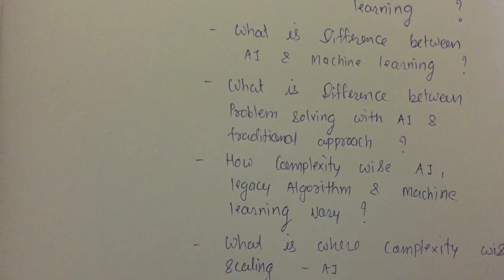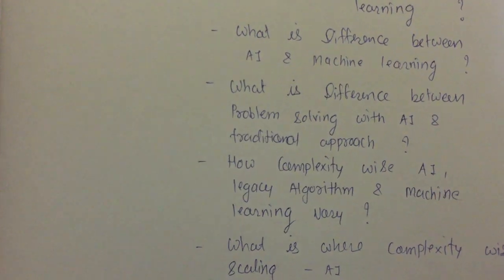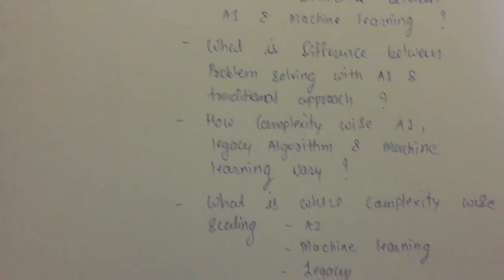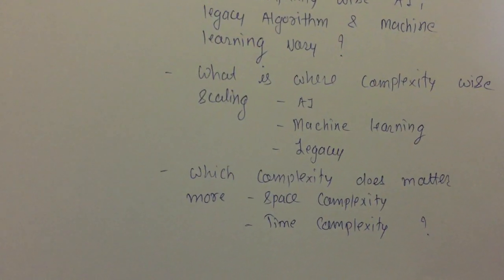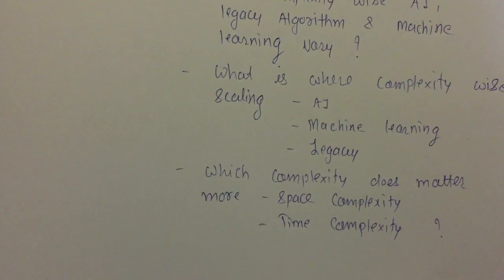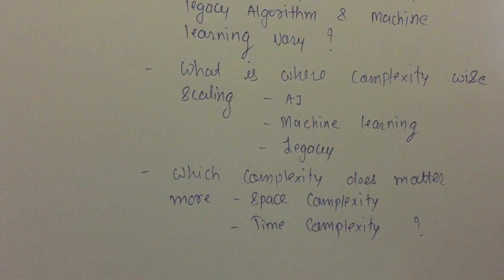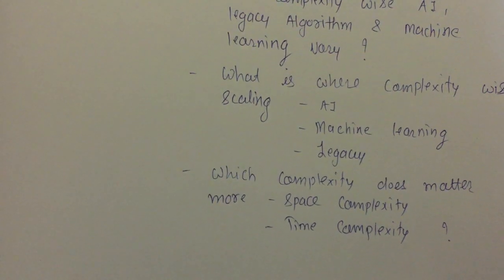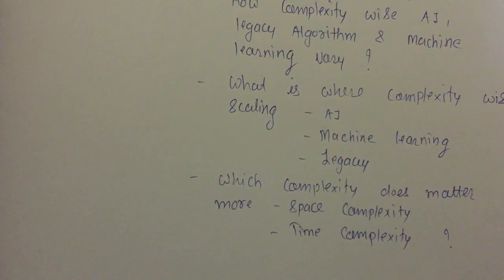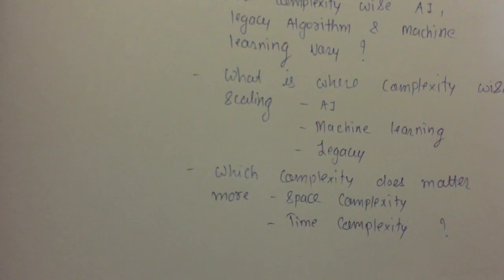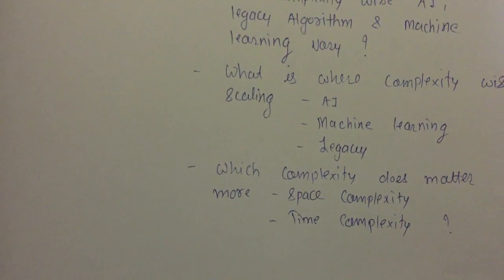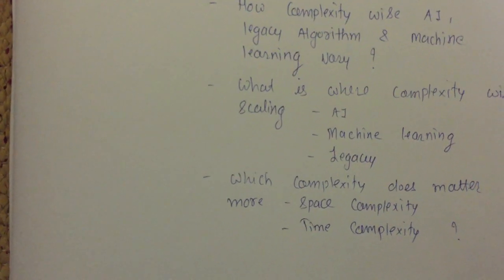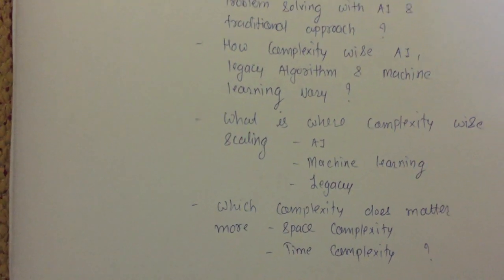When we talk about algorithms, we have to talk about their complexity. How do AI, legacy algorithms, and machine learning vary in terms of complexity? Where do machine learning algorithms, AI algorithms, and legacy algorithms stand — which are more complex in general? I also want you to find out what complexity means, what is the difference between time complexity and space complexity, and which complexity is focused on more in machine learning versus the legacy or traditional approach.